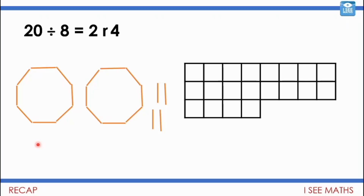This is the example we looked at yesterday: 20 divided by 8. I asked you what a picture might look like to represent that. 20 divided by 8 is 2 remainder 4, so it could be how many octagons with 20 matchsticks — we'd have 2 full octagons and 4 left over. Or it could be an area model: 2 eights and 4 left over makes 20 squares in total.